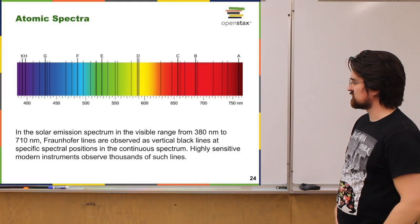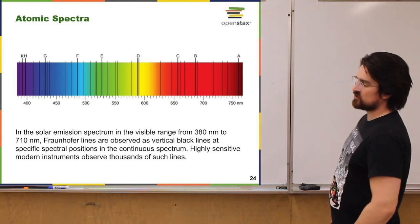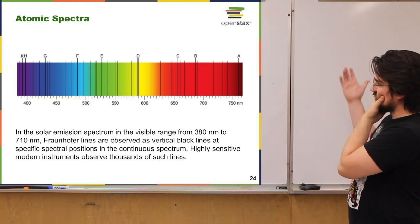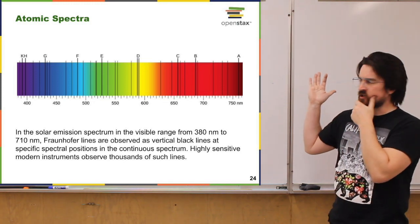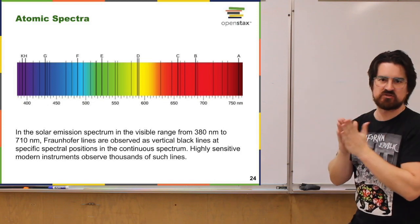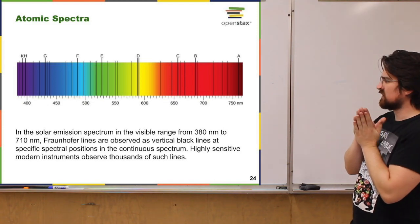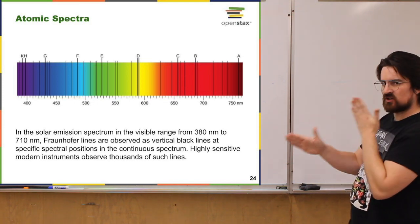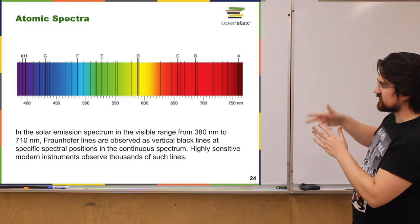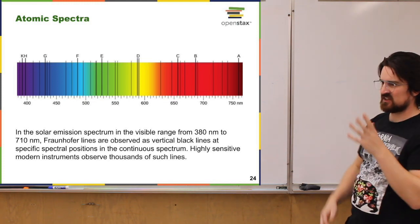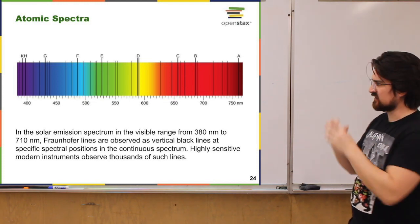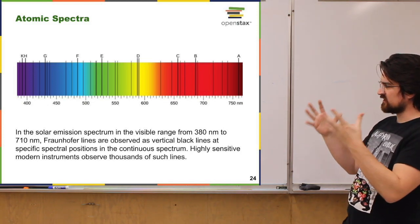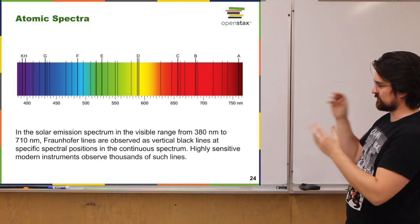Another thing that was bothering physicists and scientists had to do with what's known as atomic spectra. This is an image of the spectra of light from the sun. If you use a prism and spread the light out wide enough, maybe using a diffraction grating, you're able to see that there are actually dark lines — wavelengths that the sun does not emit. There's stuff in the sun absorbing at those wavelengths, such that the light created inside is not able to get out.